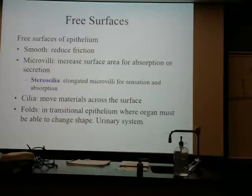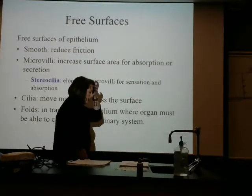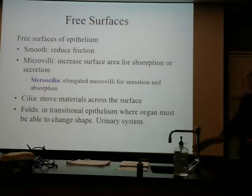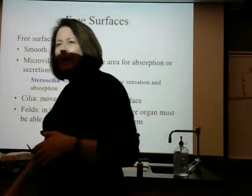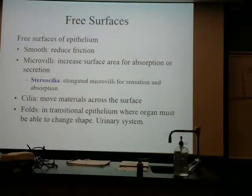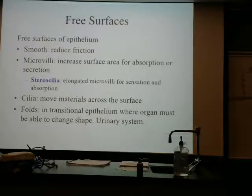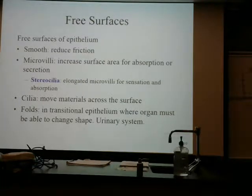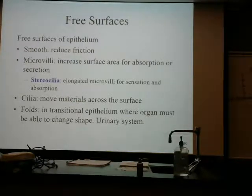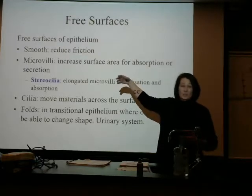When we talk about the free surface of epithelial cells, the free surface can be smooth to help reduce friction. On the free surface, it might make up what we call microvilli — remember those from the digestive system, inside the intestines? They are so good for helping absorb materials. Another place we'll find little projections is stereocilia, which we're going to see in the ears — the sense of hearing and the part that comes with equilibrium.